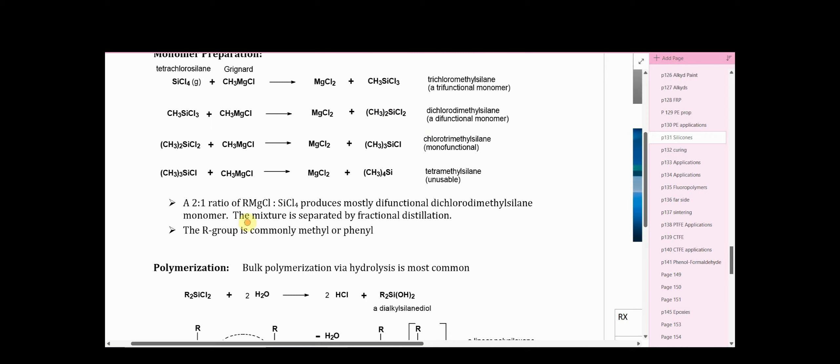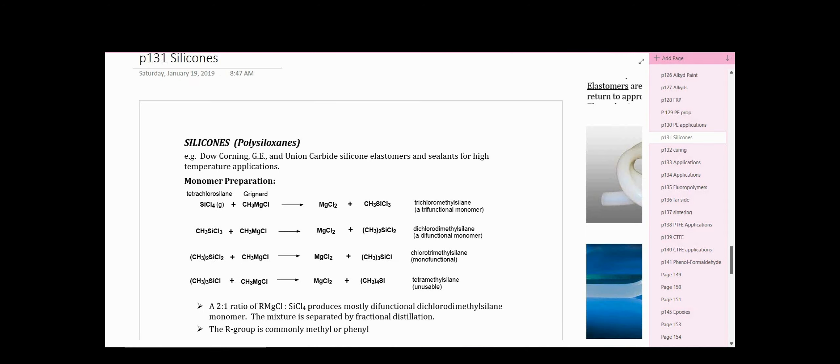So a two to one ratio of Grignard to tetrachlorosilane would produce mostly difunctional dichlorodimethylsilane monomer. The mixture produced would be fractionally distilled to separate the components. The R group in the Grignard is typically either methyl or phenyl. Now I mentioned that this is a substitution reaction.